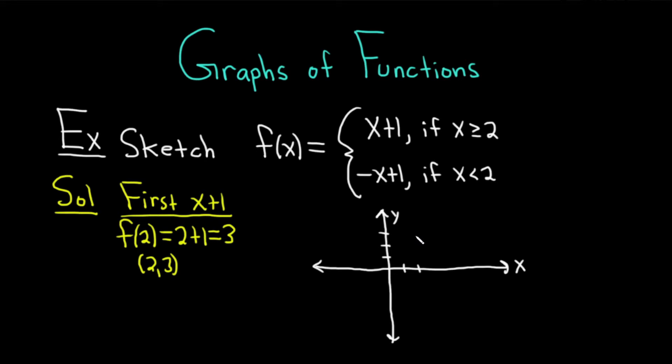And we have an ordered pair here. I'm going to use blue. And that's our one point we have on this x plus 1. Now we're going to use some knowledge. We know that x plus 1, y equals x plus 1, is a line with a positive slope.